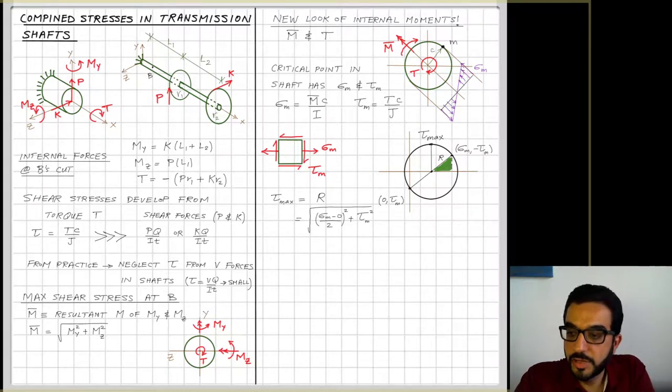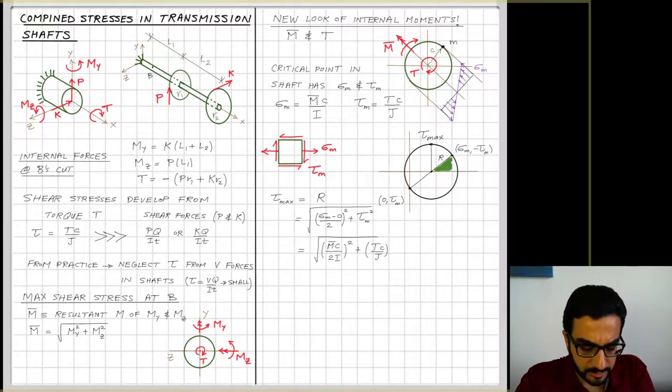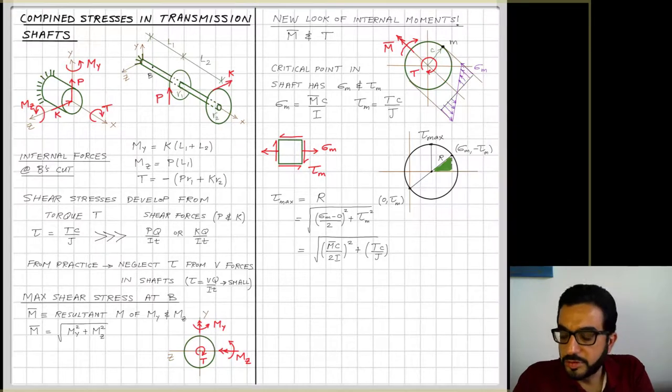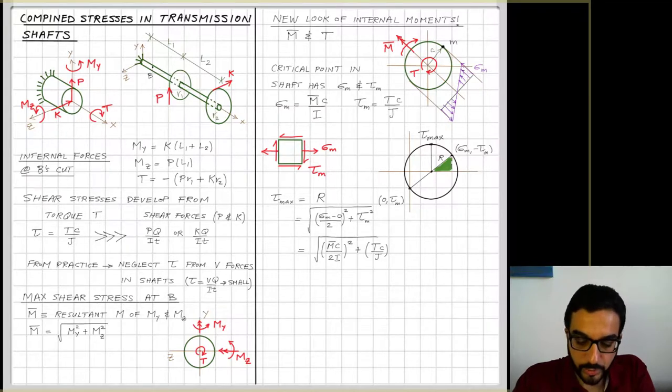So τmax here from our circle is equal to the radius. And to figure out the value for it, we'll look at this triangle. And it's equal to the square root of the horizontal distance, which is equal to σm minus σ vertical to it, which is in this case zero, divided by two, that's to the power two, plus τm, which is the vertical side of the triangle.